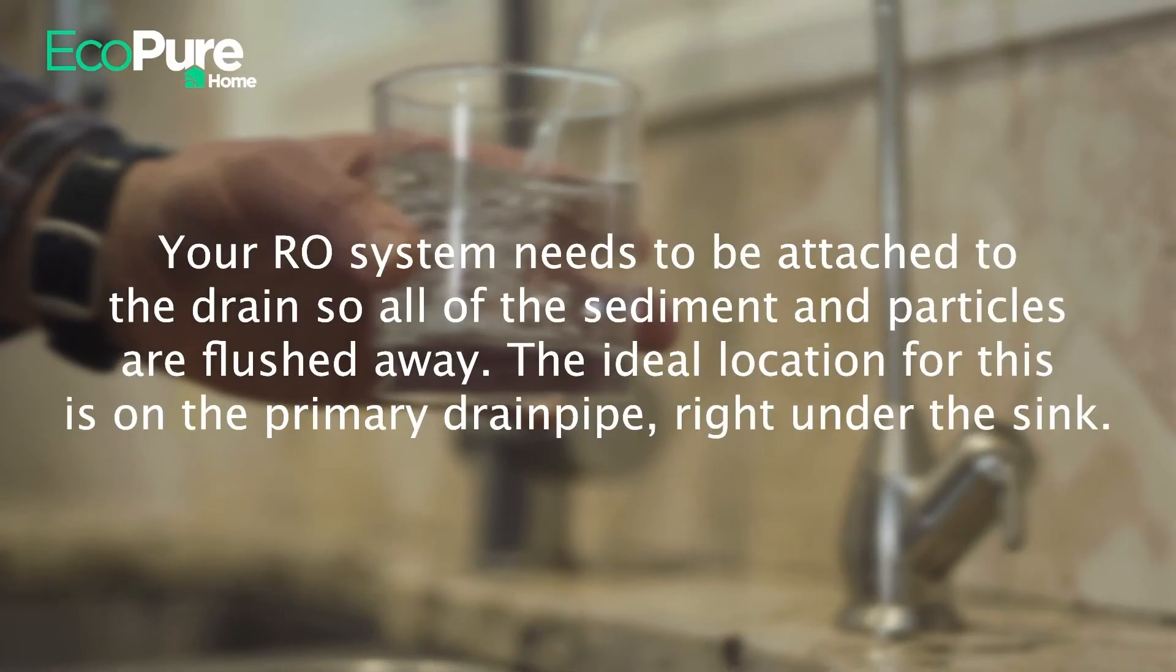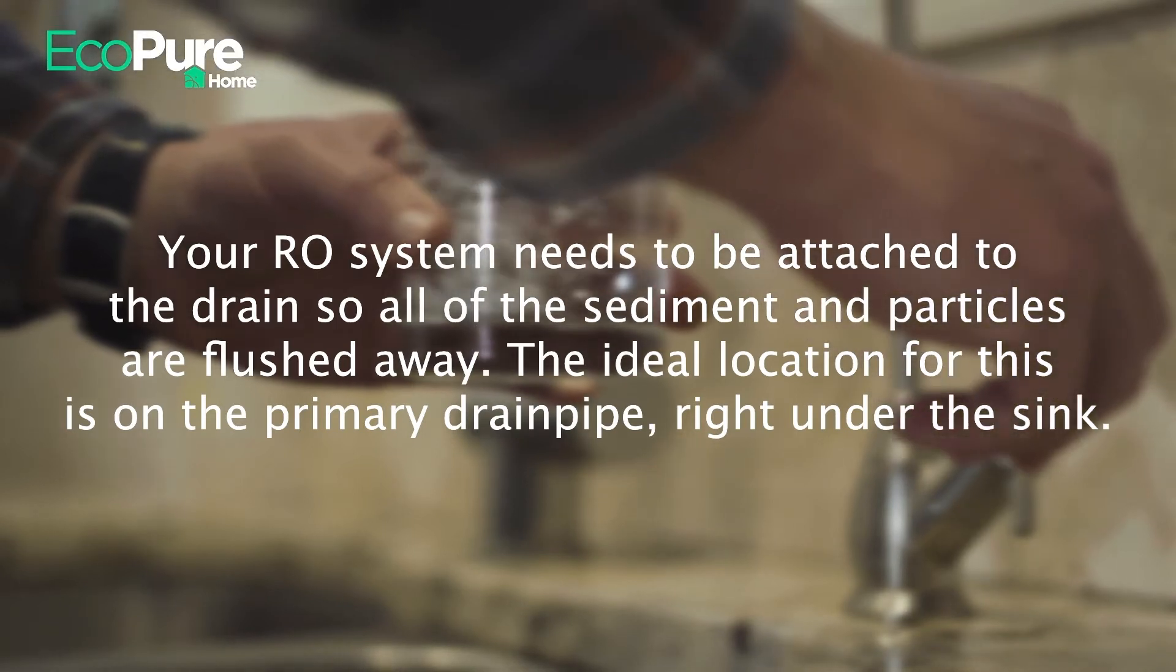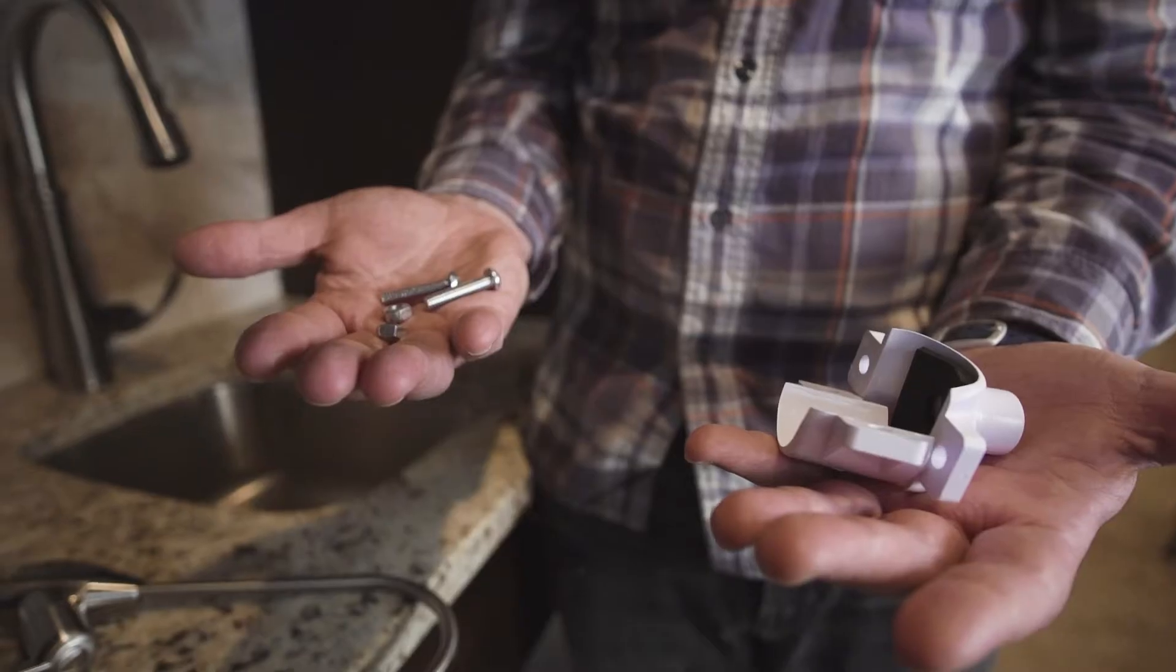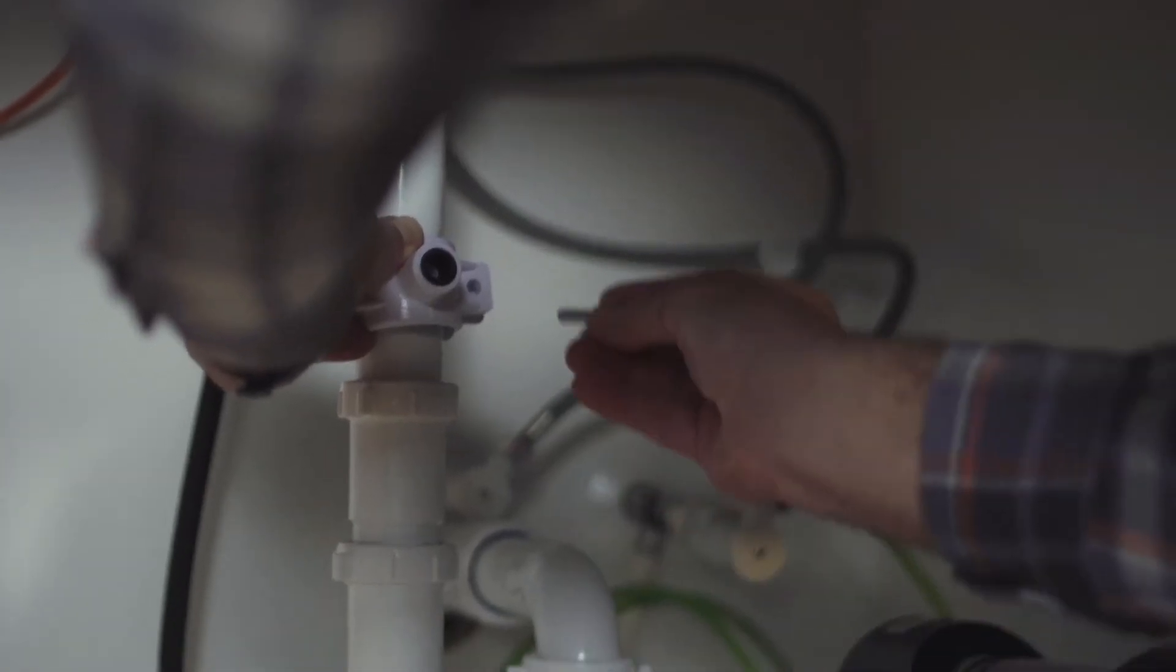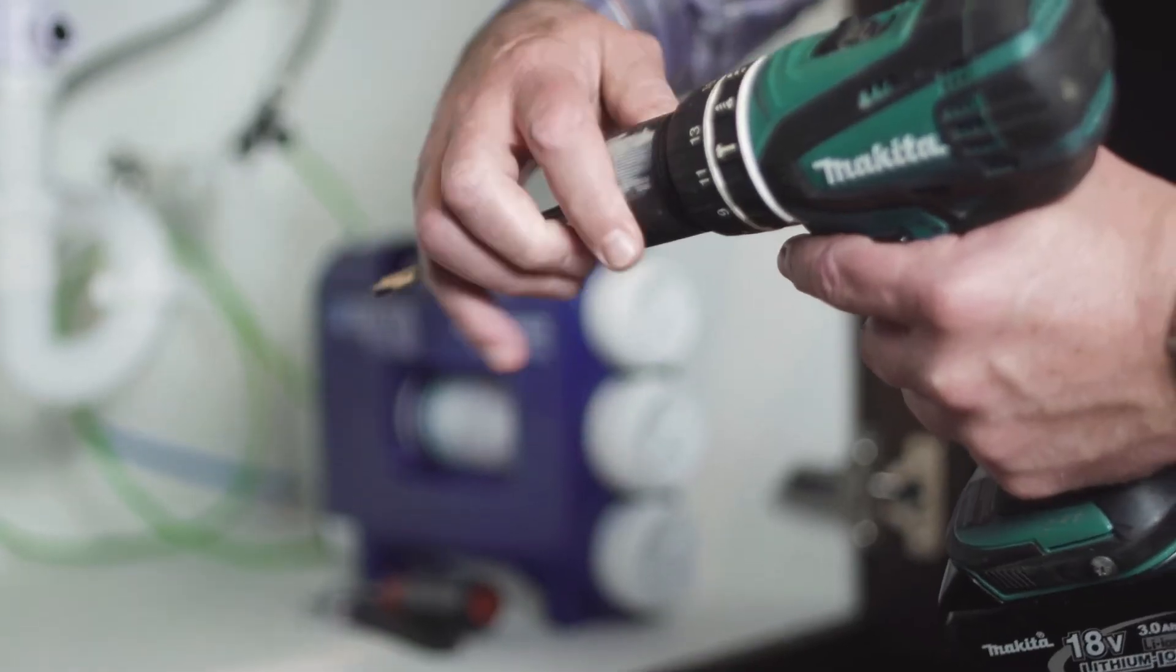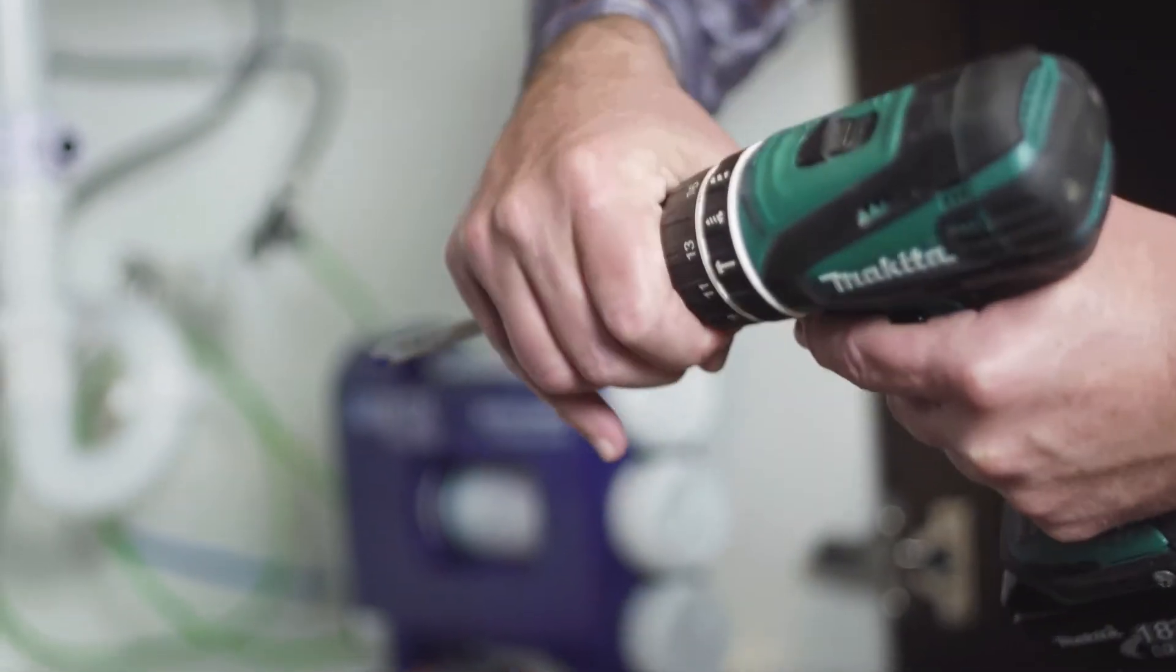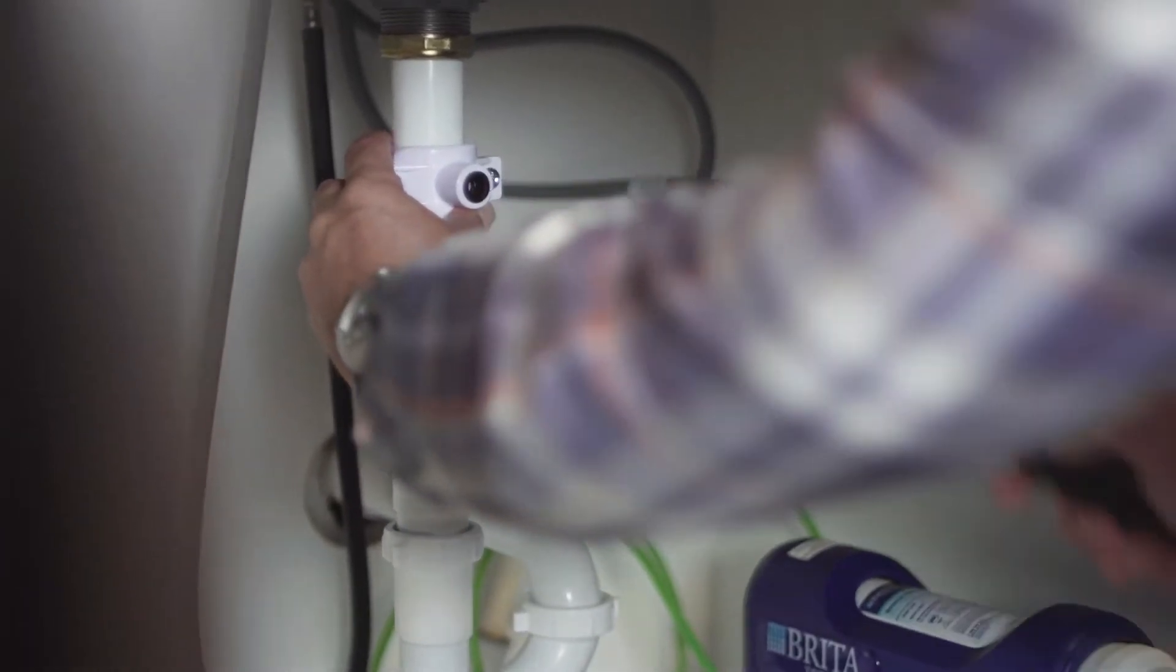Your RO system needs to be attached to the drain so all of the sediment and particles are flushed away. The ideal location for this is on the primary drain pipe right under the sink. Loosely attach the adapter to the drain pipe, making sure the connection point is facing the RO faucet. Mark the location of the quick connect fitting on the drain pipe with a marker. Next, drill a 3/8 inch hole in the drain pipe, reattach the drain adapter securely, and done.